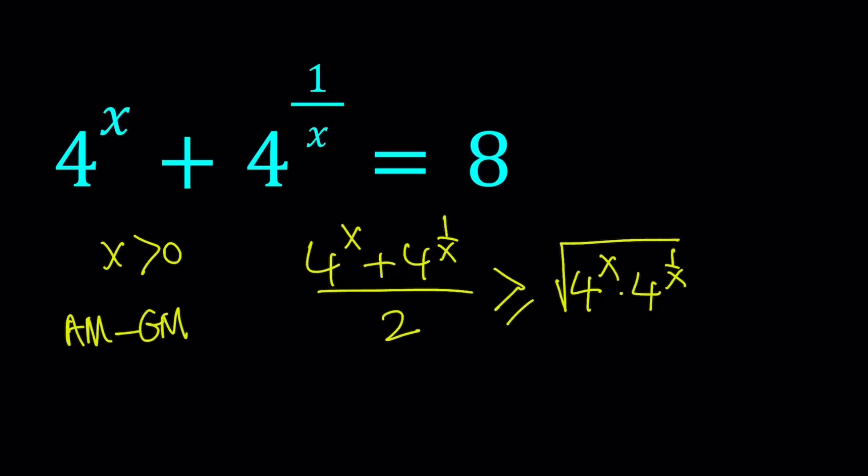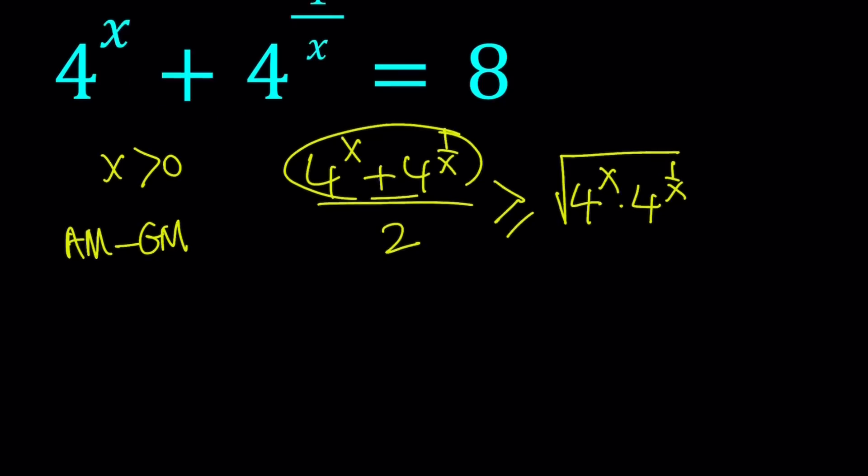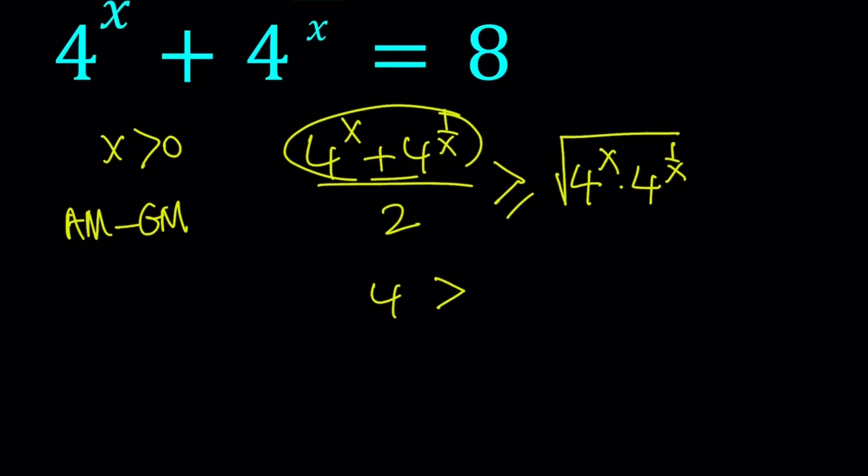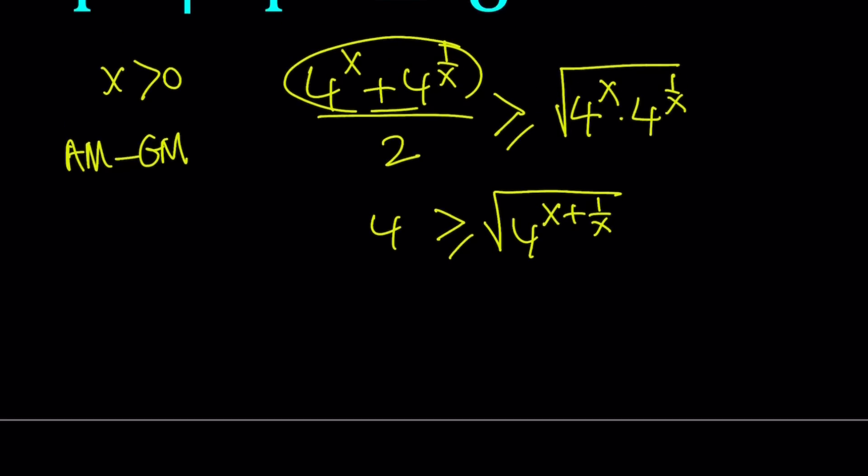Now we do know that 4 to the power x plus 4 to the power 1 over x is equal to 8. So we can replace this with 8. And that's going to give us 4 is greater than or equal to square root of 4 to the power x plus 1 over x, since we can add the exponents when the bases are equal. So how does this help us? First of all, notice that everything inside the radical is positive. We can square both sides. If you square both sides and put the 4 to the power x plus 1 over x on the left-hand side, you get 4 to the power x plus 1 over x is less than or equal to 16.